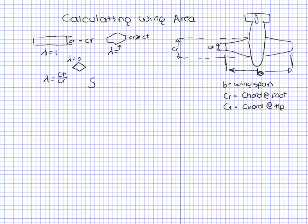The formula for wing area is wingspan B times the average chord. If the wing is completely rectangular, it's going to be wingspan times the chord.